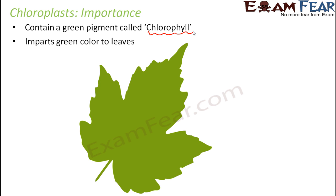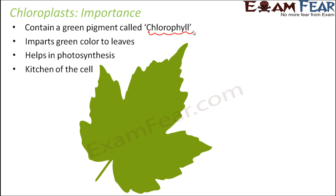Chloroplasts impart green color to the leaves. Since chloroplast is so very important, we will spend some more time understanding its structure. Chloroplast is present in the mesophyll layer of a dicot leaf. Chloroplast is also called the kitchen of the cell — just as you have a powerhouse in the cell which is mitochondria, and a control center which is the nucleus. Different compartments have different specific functions, and that is why we talk about compartmentalization of the cell.